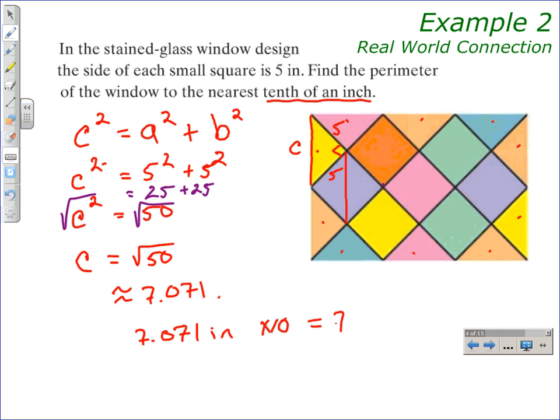We round to 70.7 inches. So the perimeter around the stained glass window is 70.7 inches. This was a real-world connection working with radicals.